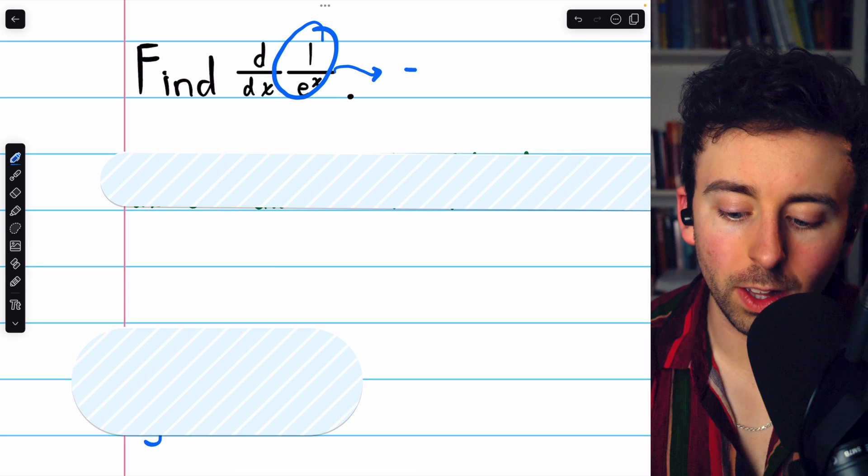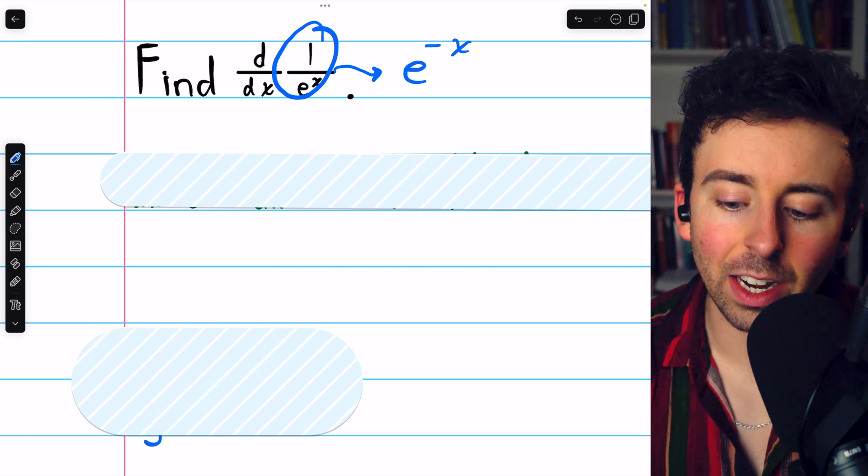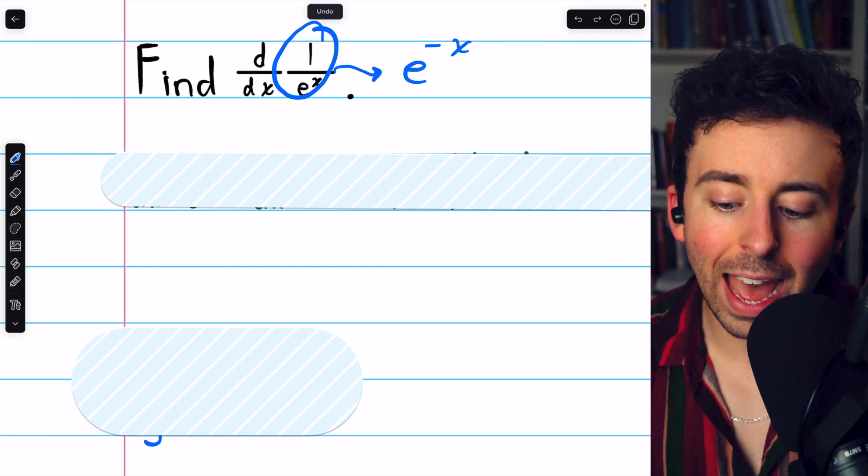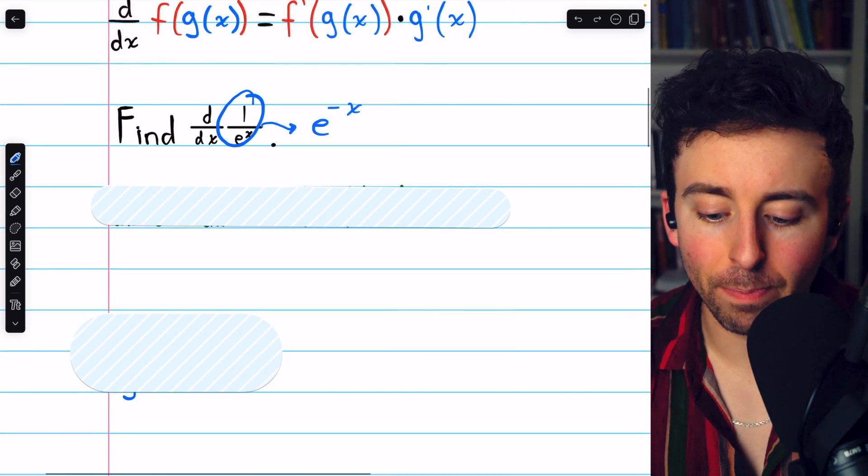1 over e to the x, hopefully you recall, is the same as e to the negative x. So we have the exponential function with negative x inside of it. It's a composite function.